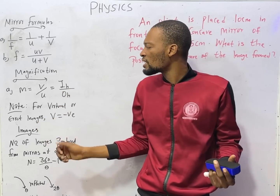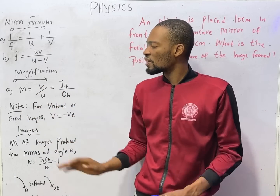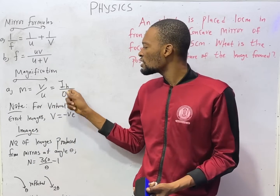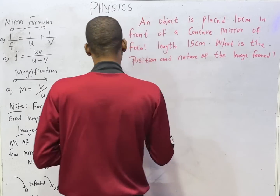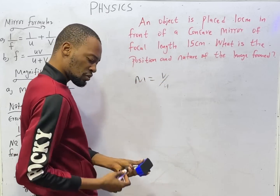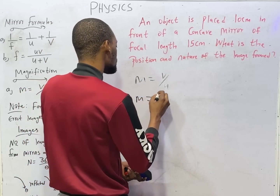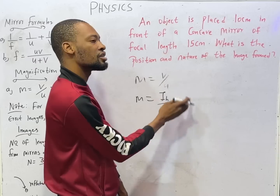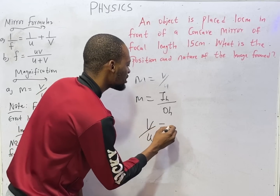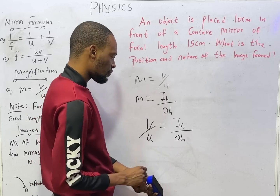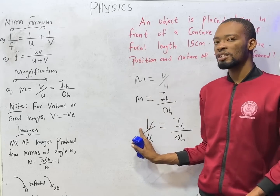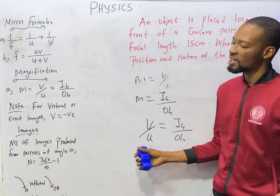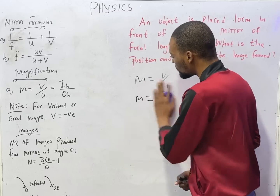Magnification is very simple. The formula is: magnification equals image distance over object distance. That is it — M equals V over U. It is also equal to image height over object height, so M equals IH over OH. Since M equals both of these, it means image distance over object distance equals image height over object height. There are cases where you have the image distance, object distance, and object height and need to find the image height, or one of them is missing — all these formulas will come in handy.